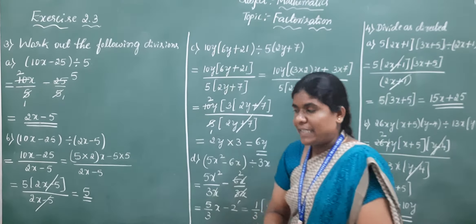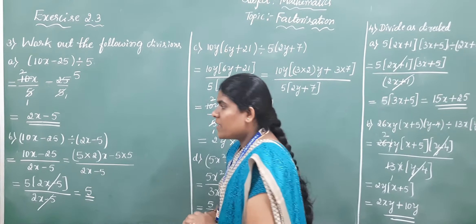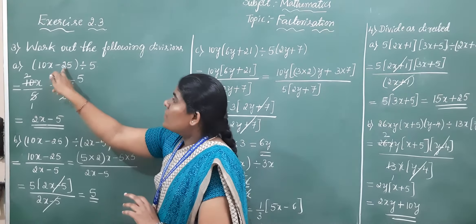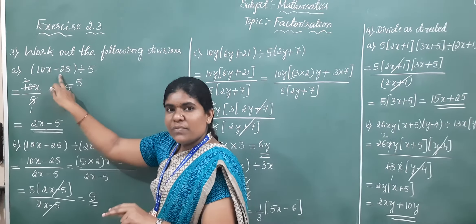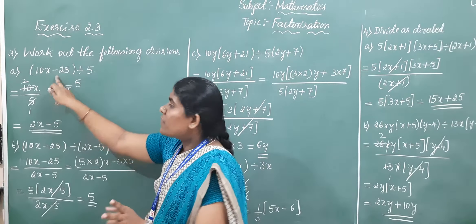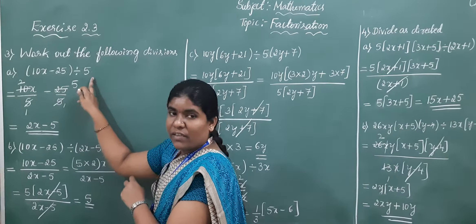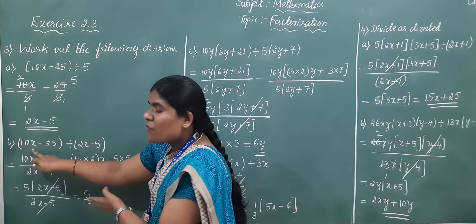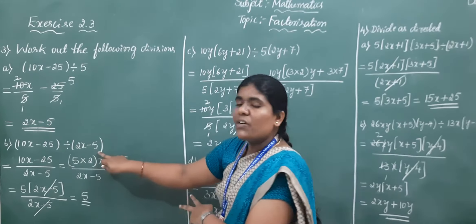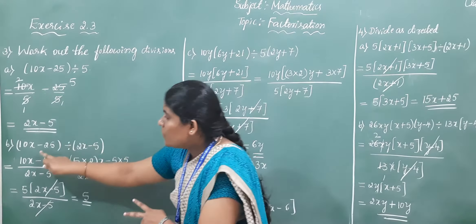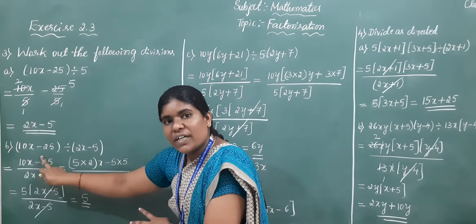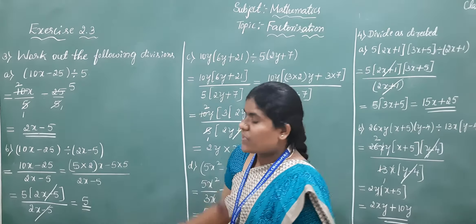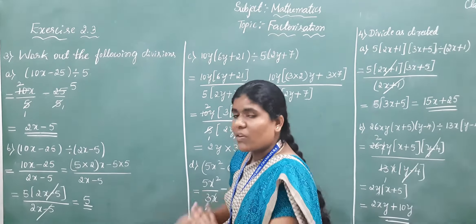Now I will consider another example. Observe carefully, children. In the first problem, how many terms were there? 2 terms — that was a division by a monomial. In the second problem, we have a division of binomial by binomial. Both the numerator and the denominator contain 2 terms. How do we solve this?